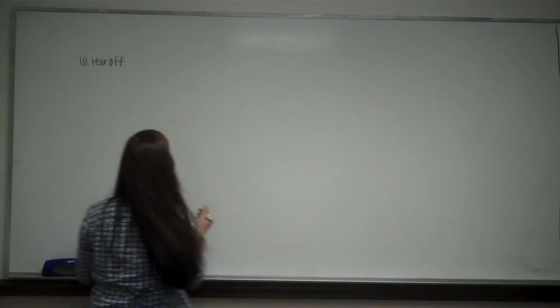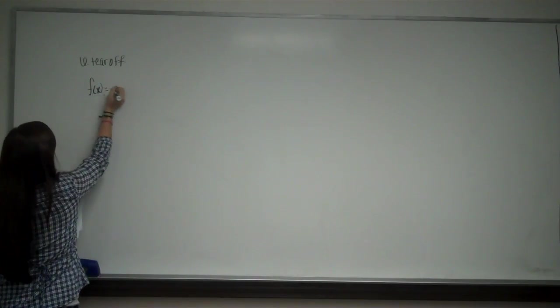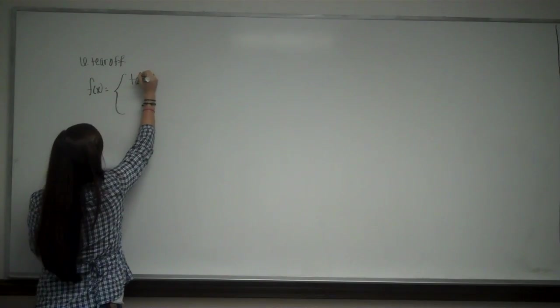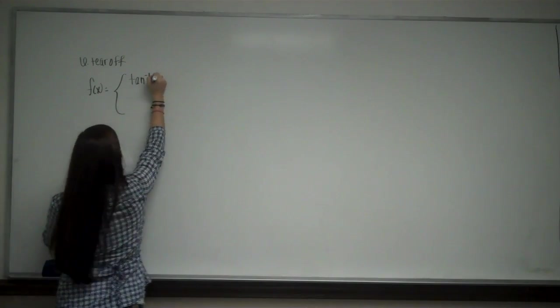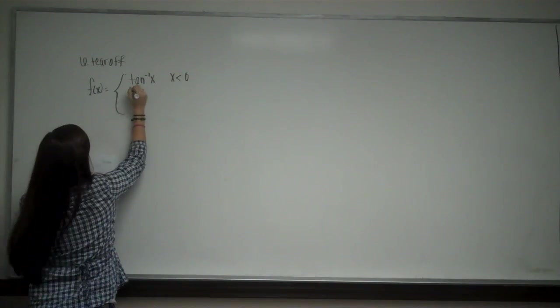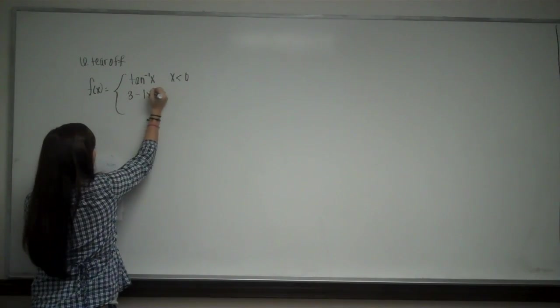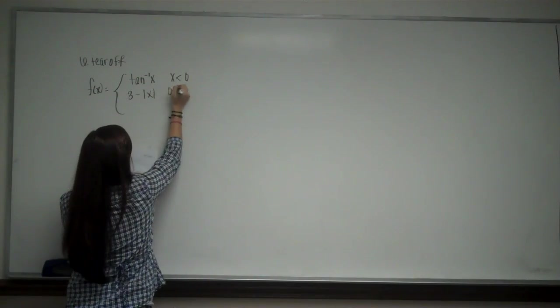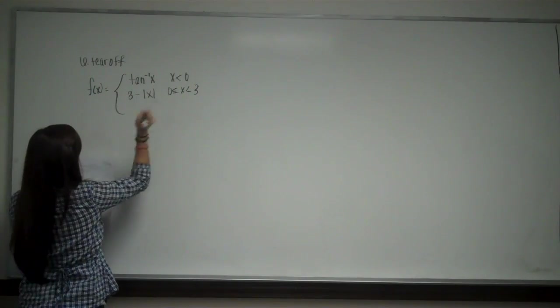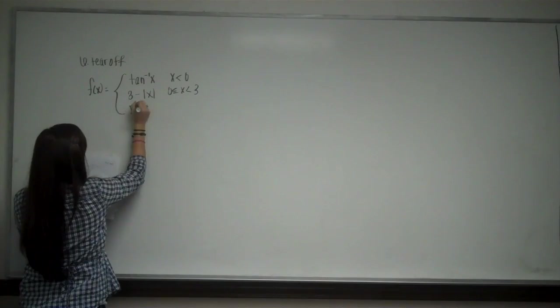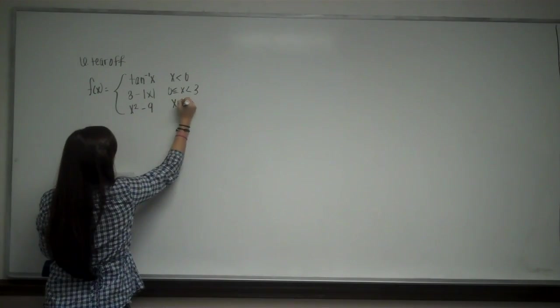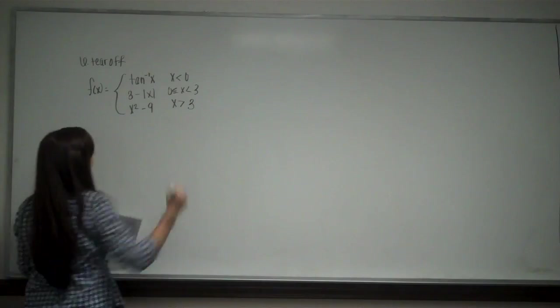So this is our function. We have tangent inverse x when x is less than zero. We have three minus the absolute value of x when zero is less than or equal to x which is less than three. And then we have x squared minus nine when x is greater than three.